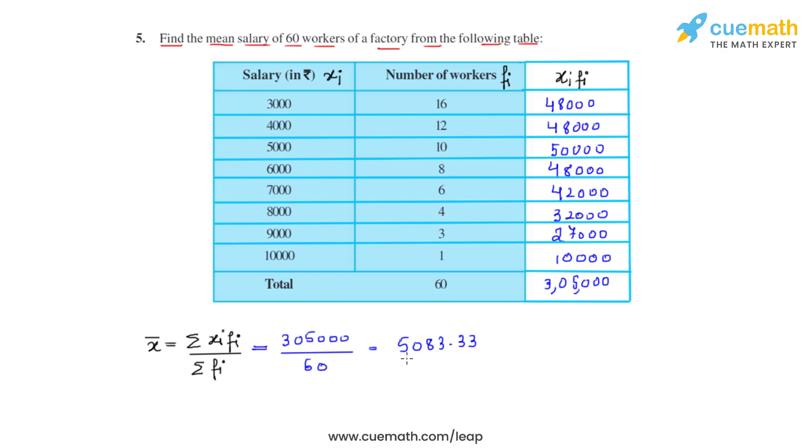The final answer that we get is five thousand eighty three point three three. So this is the mean salary of sixty workers of the factory. We can say that rupees five thousand eighty three point three three will be the mean salary of the sixty workers which work in the factory and this is how we solve this question.